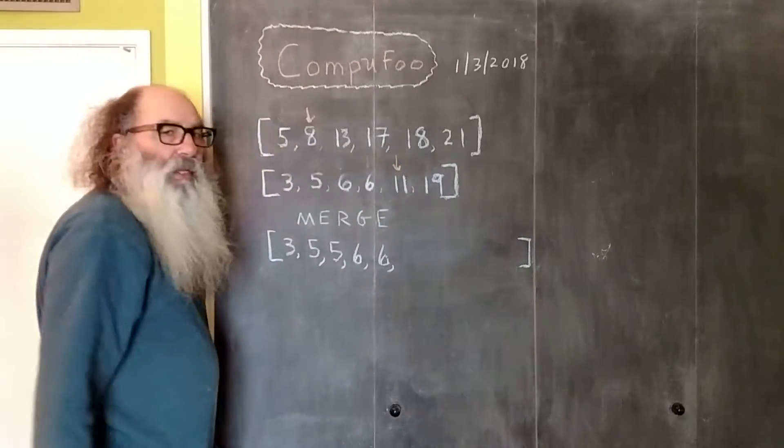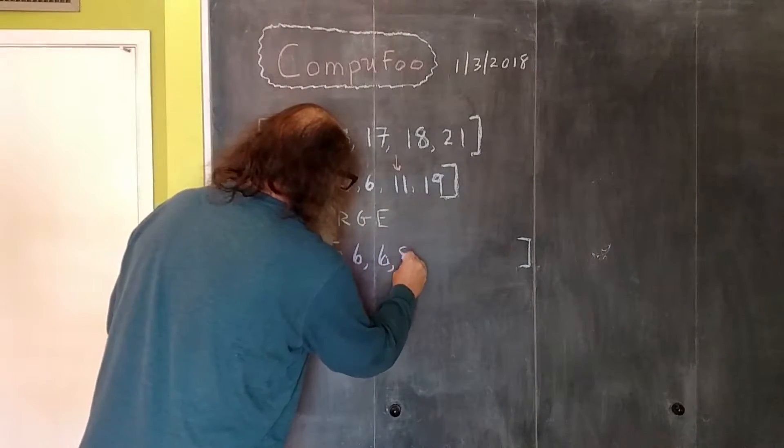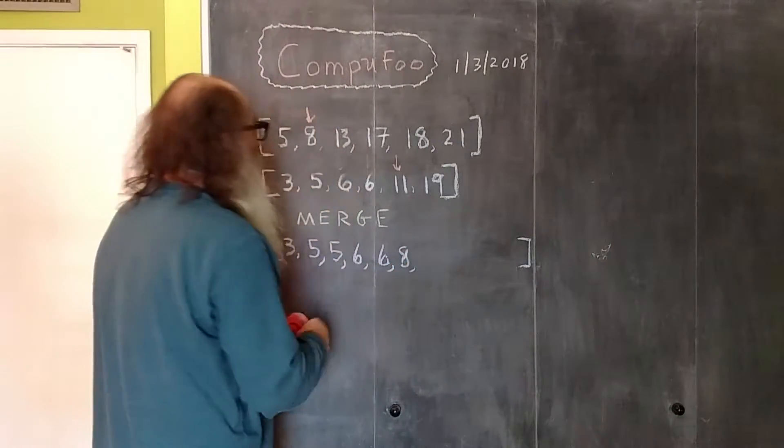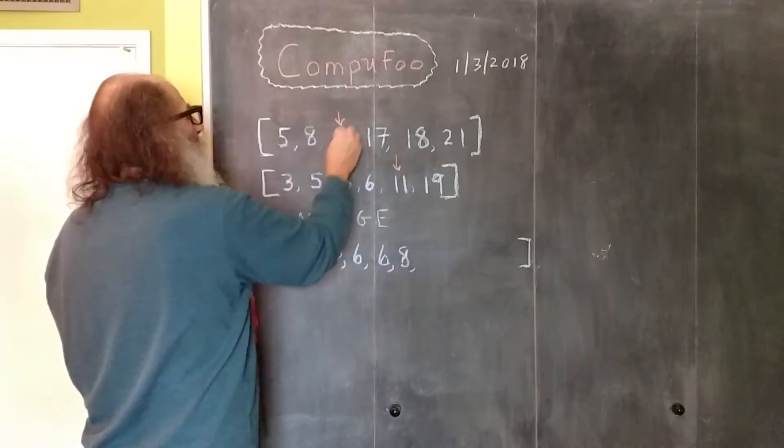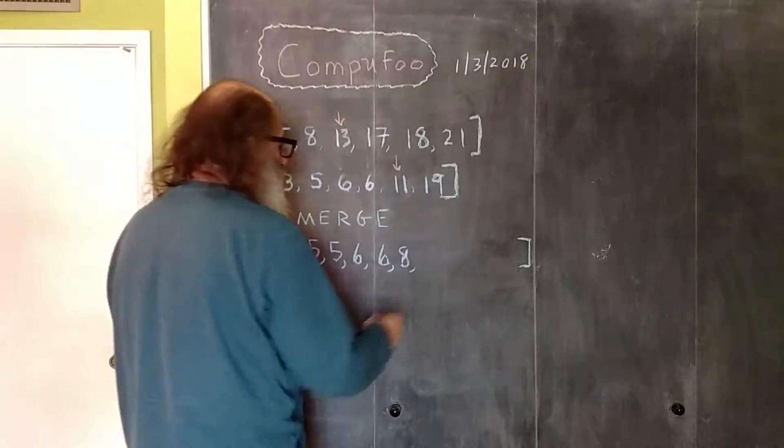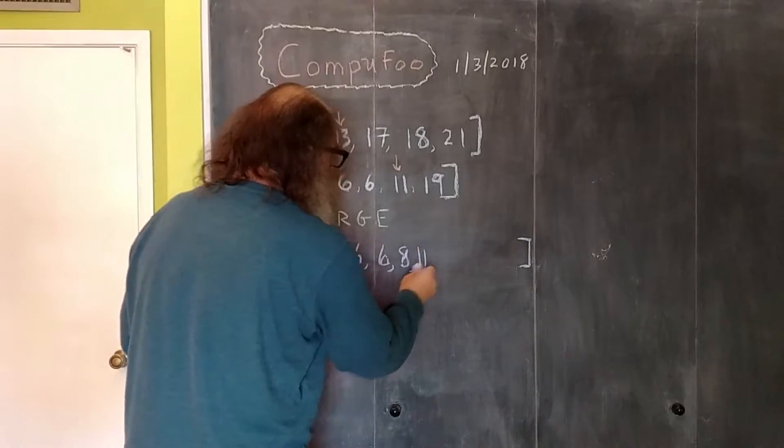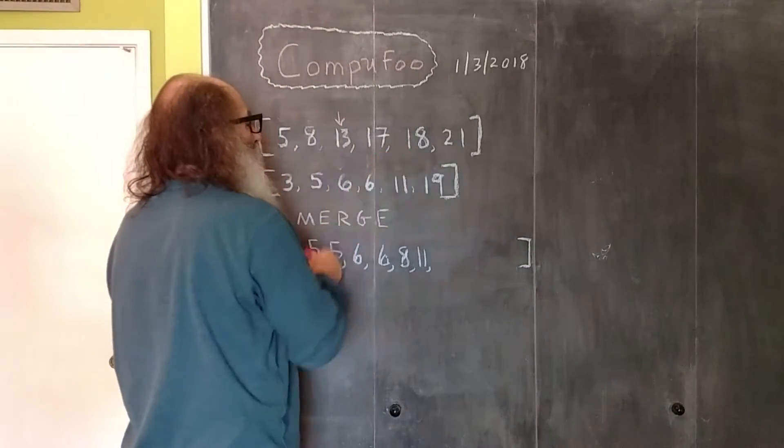Eleven less than the eight? That's false, so the eight goes in. And now we adjust this pointer, we go ahead and we adjust this pointer.